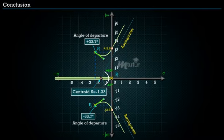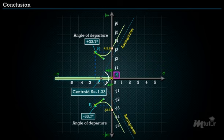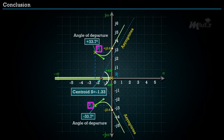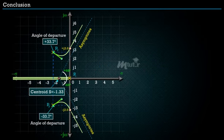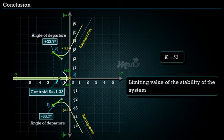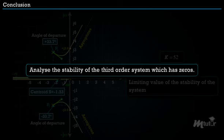Conclusion: The root locus has three branches. One branch starts at the pole at the origin and travels through the negative real axis to meet the zero at infinity. The other two branches start at complex poles, cross the imaginary axis at ±j3.6, and travel parallel to the asymptotes to meet the zeros at infinity. The value K = 52 is the limiting value for stability.